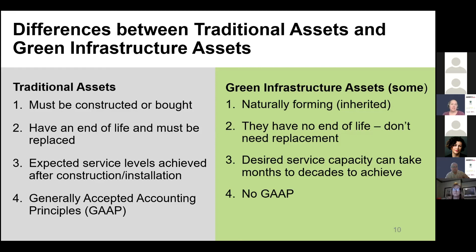Another difference is that when you build a traditional asset, your expected levels of service are generally achieved as soon as construction is complete or it's operational. Many green infrastructure assets can take months, years, or even decades to achieve their full expected service level — it takes time for a tree to grow. This also means that your asset appreciates in value instead of depreciating, which is very different from most assets. Traditional assets have generally accepted accounting principles, or GAAP, whereas natural assets currently do not, so we've had to develop methods for valuing these assets based on accounting principles.